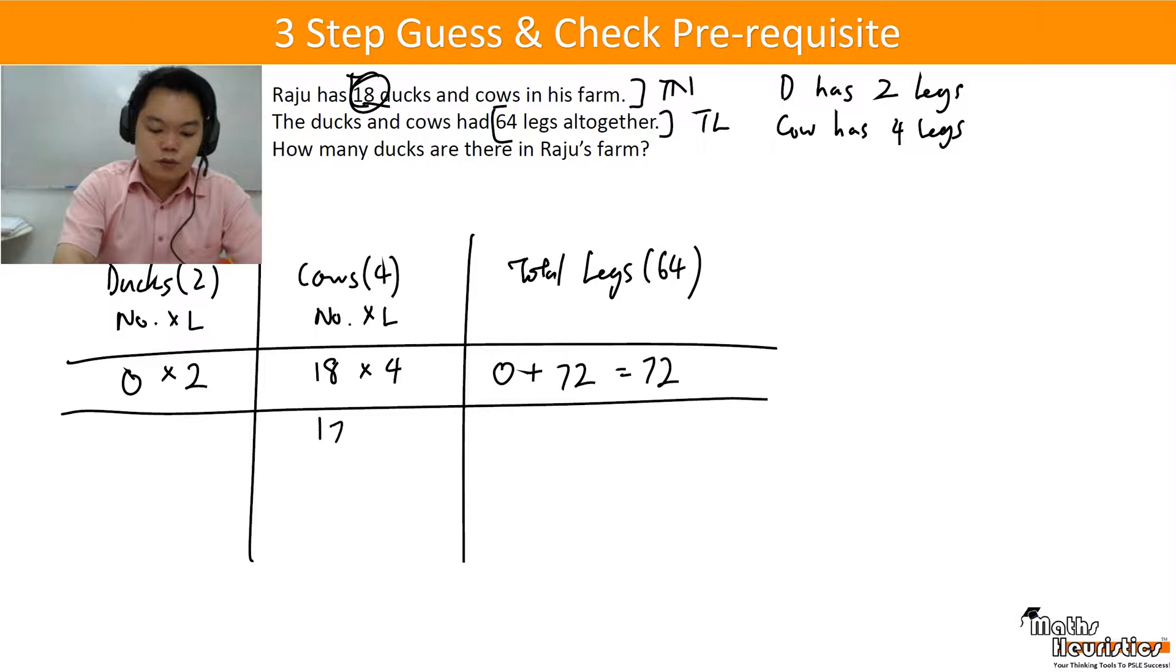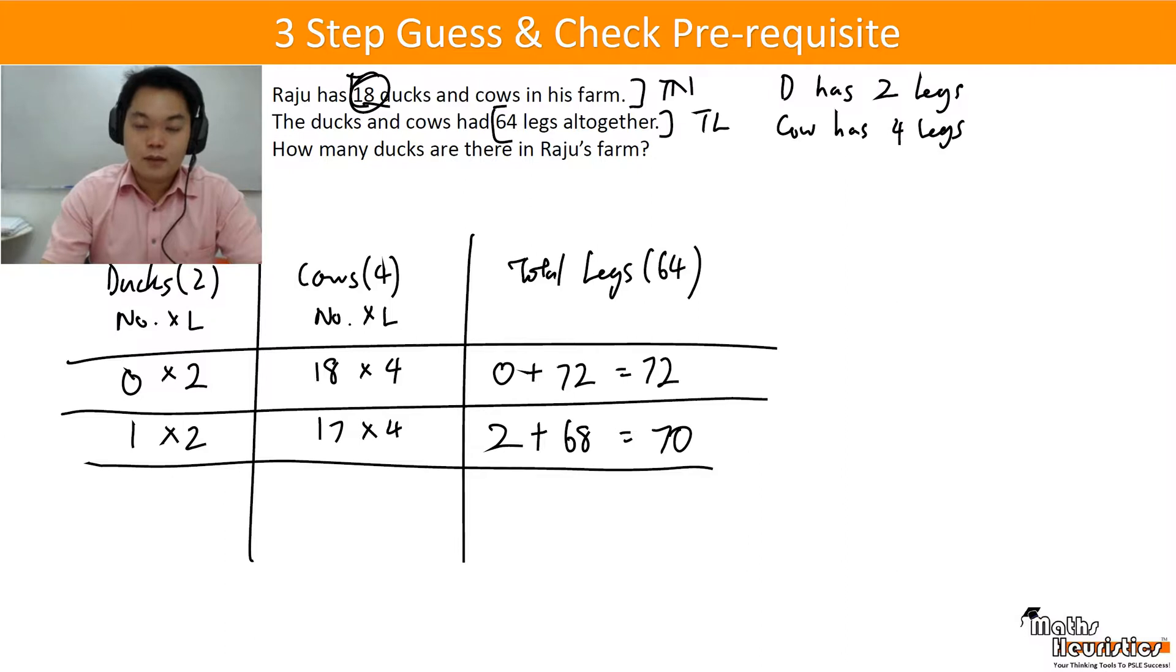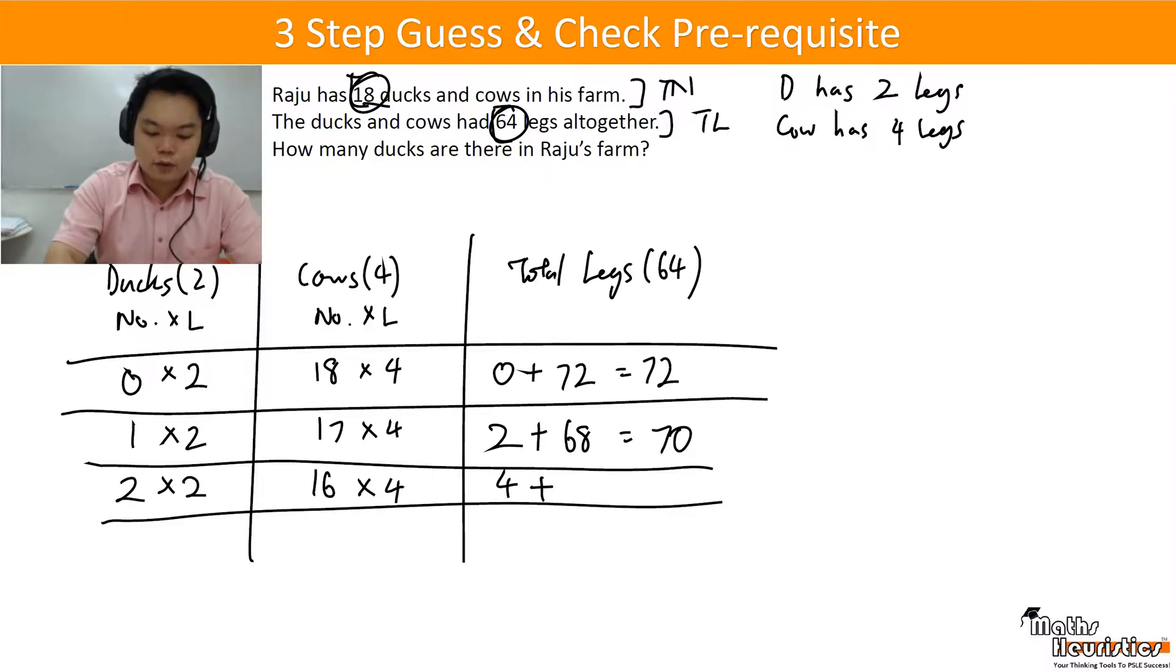So now I need to replace 1 cow with 1 duck because I have too many legs already. So I need to cut down on the number of legs. This is what I need to do. So I have 2 plus 68 now, giving me 70. True enough, we are going towards 64. We are decreasing the number of legs, going down to 64. Then I continue to replace this cow with the duck. So now I have 4 plus 64 to give me 68. So I haven't reached 64 yet.